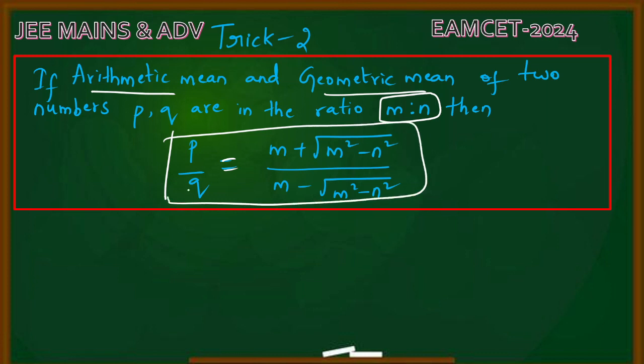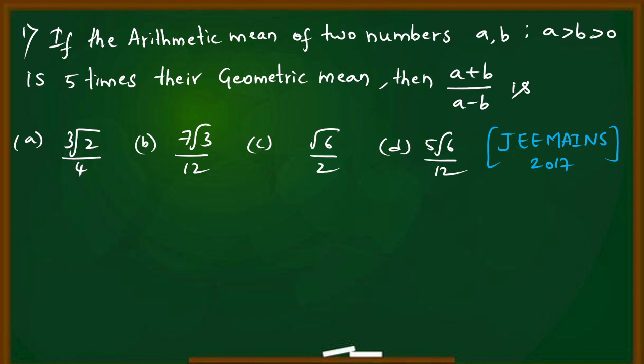Here's the question: If the arithmetic mean of two numbers a, b where a > b > 0 is 5 times the geometric mean, that means arithmetic mean to geometric mean ratio is given. Since arithmetic mean is 5 times geometric mean, the ratio is 5 to 1. So m is the arithmetic mean value 5, and n is the geometric mean value 1.